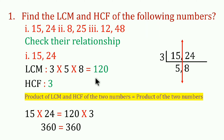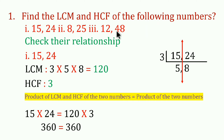The second problem is 8 and 25. These two numbers have no common factors, so they are coprime and the HCF is 1. The third problem is 12 and 48. These are both even numbers, so they are divisible. We find the LCM and HCF similarly to the first problem.